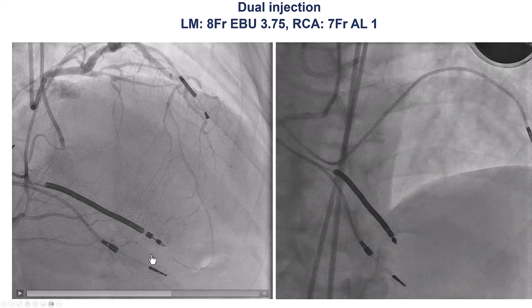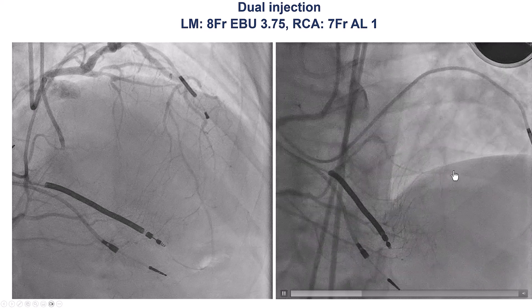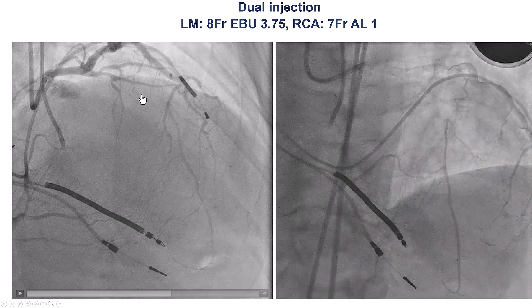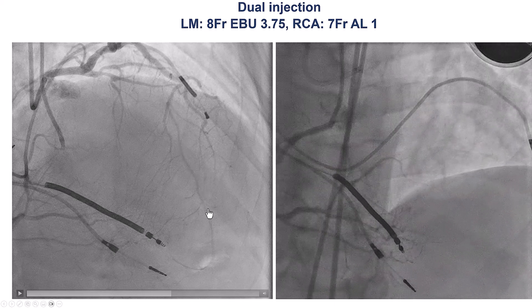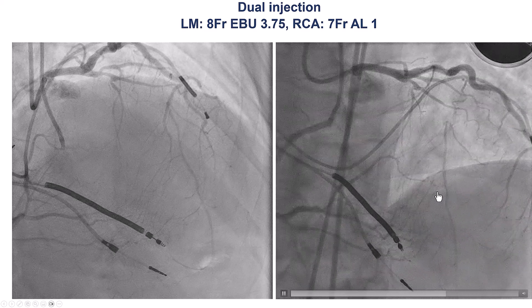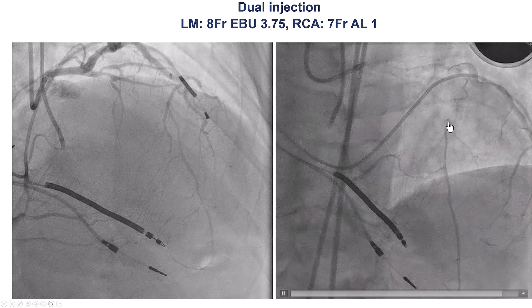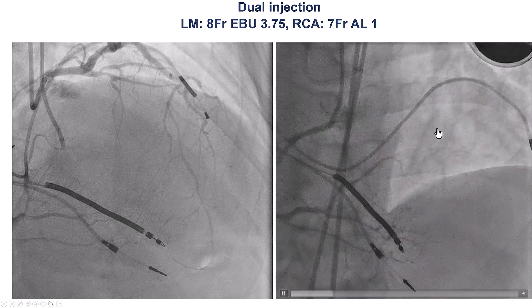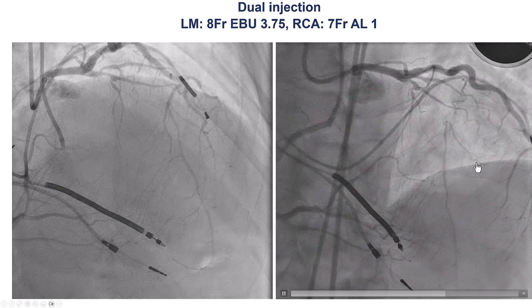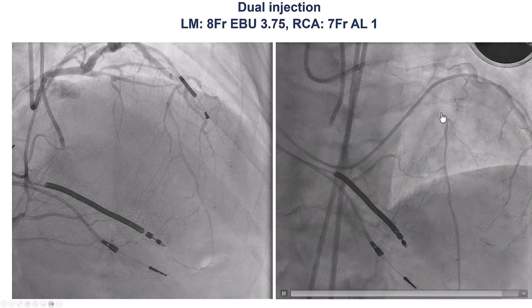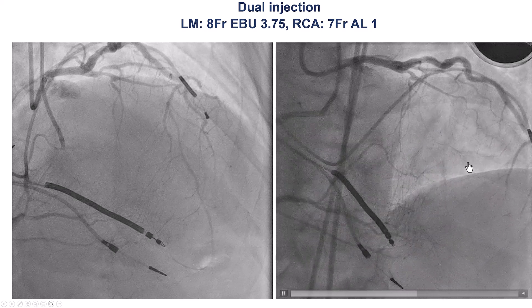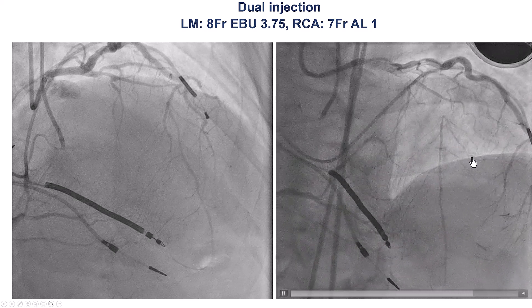We do have septal collaterals coming from the PDA all the way to the LAD. The lesion length is about 25–30 mm, and the distal vessel is small and diffusely diseased, likely because of underperfusion due to the long duration of the occlusion. We also see that there is a bifurcation on the distal cap — another diagonal coming off there — which is fairly common, as flow is preserved to side branches.